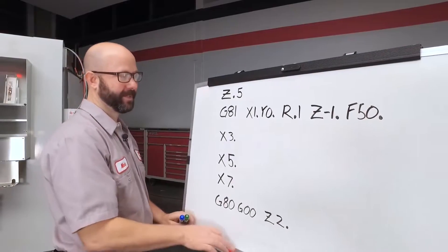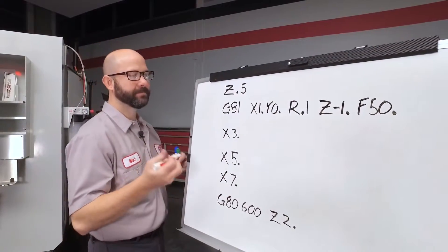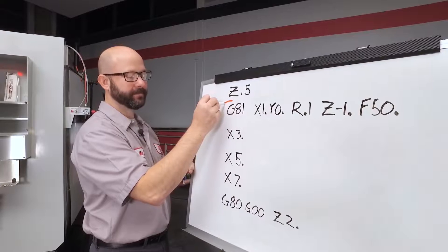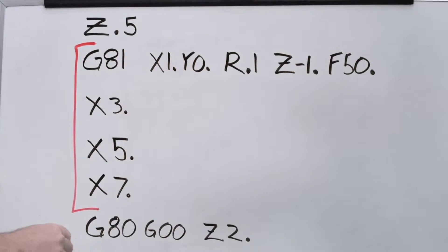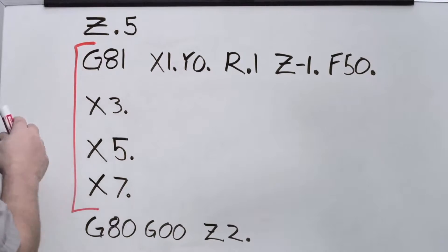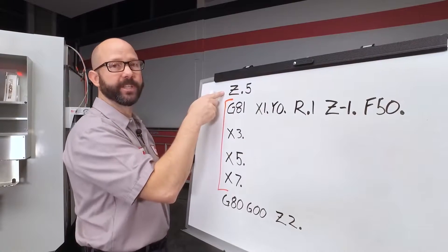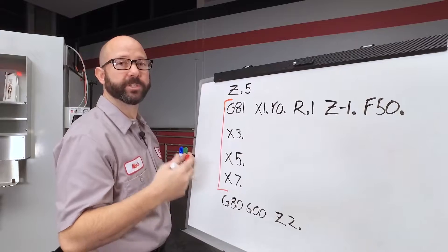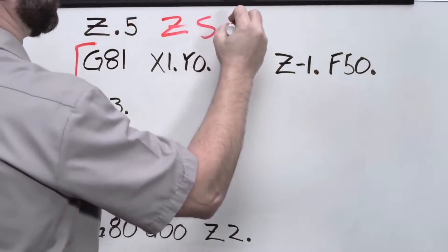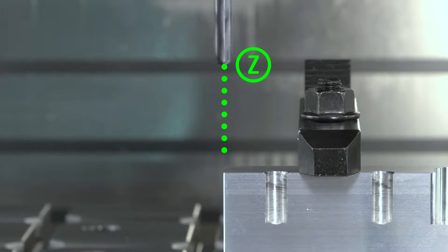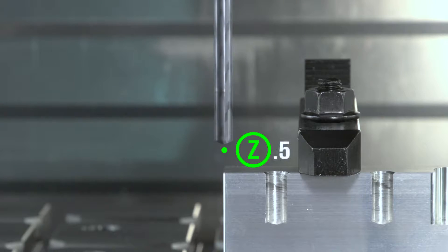Well, here's our program. Now, our CAN cycle starts with our G81 line and goes all the way until we cancel it with a G80. Just prior to our CAN cycle, we positioned our Z axis. Now, the control is going to store that value as our Z starting position. Just lock that value in your memory for a minute. We'll come right back to it.